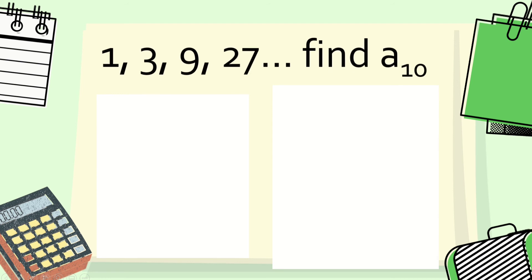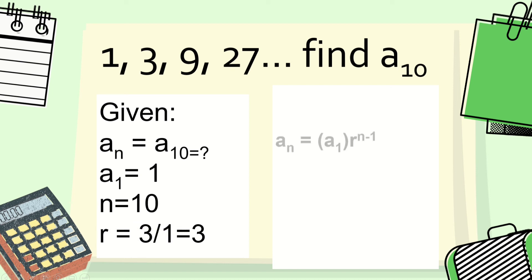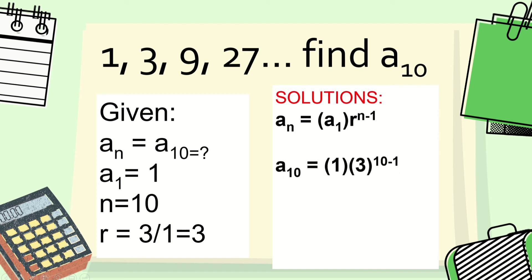The next example uses the same sequence 1, 3, 9, 27, but find the 10th term. The given: a sub n equals a sub 10, a sub 1 equals 1, n equals 10, r equals 3. Substituting: a sub 10 equals 1 times 3 raised to 10 minus 1, which simplifies to 3 raised to 9. Therefore a sub 10 equals 19,683.